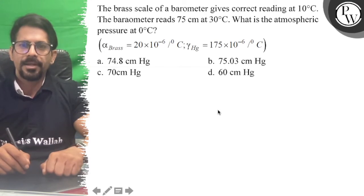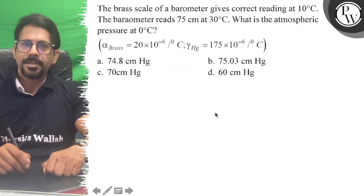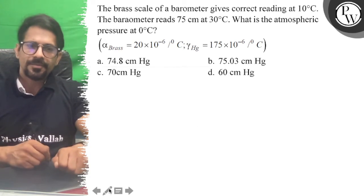The brass scale of a barometer gives correct reading at 10°C. The barometer reads 75 cm at 20°C. What is the atmospheric pressure?